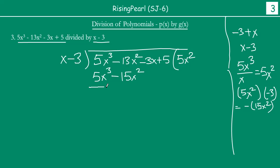Now we will subtract this. Sign will change here. So plus 15x square minus 13x square will give you 2x square. Then these terms will come down directly. Minus 3x plus 5.